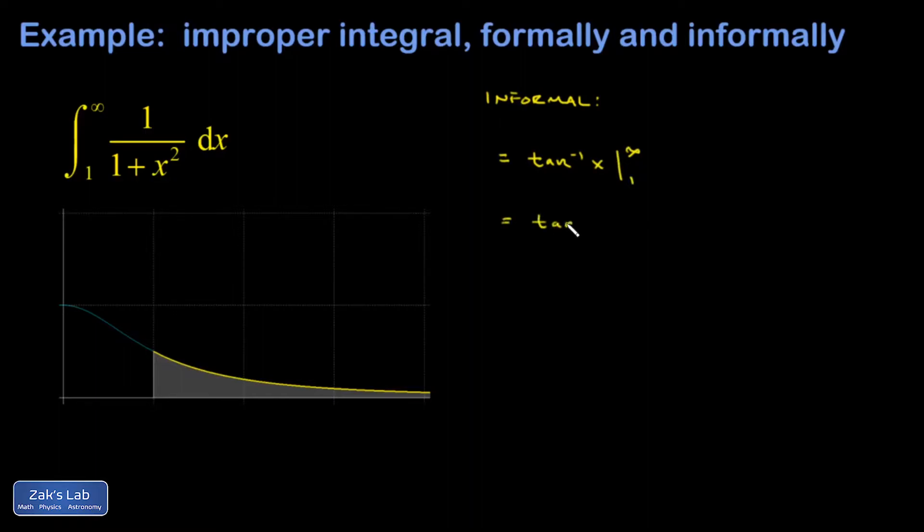And so I have the angle whose tangent is infinity minus the angle whose tangent is 1. I have to think about the unit circle to figure this out.